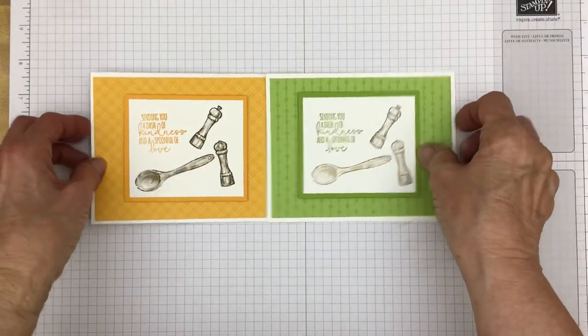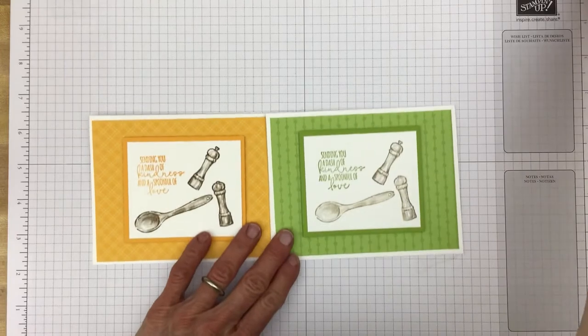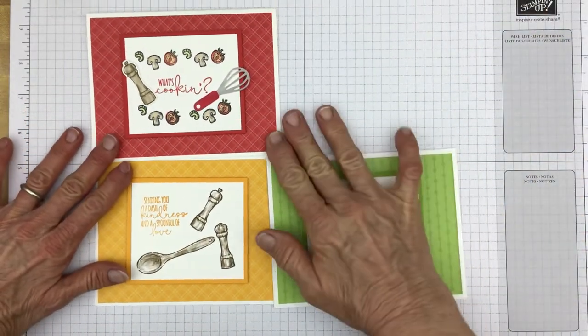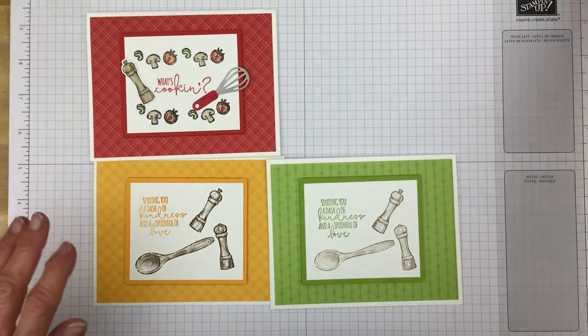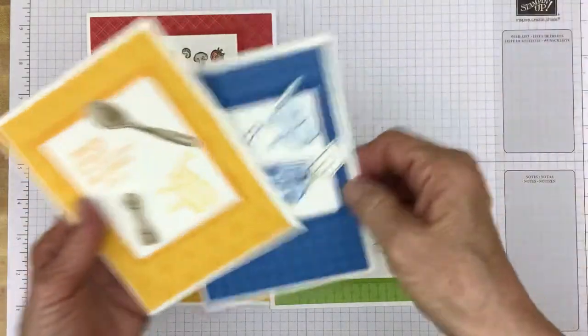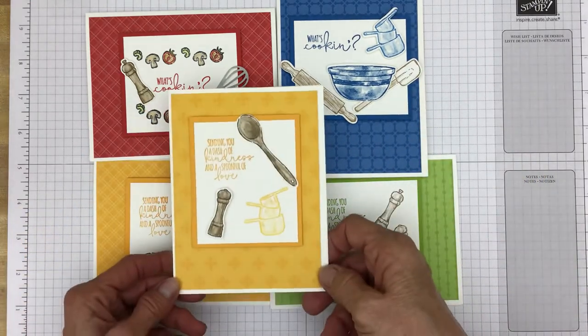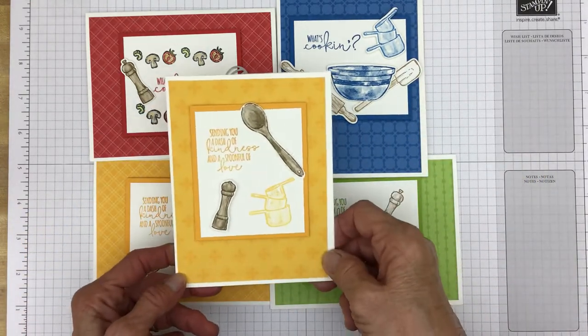So there's the Granny Apple Green. And then there's the Poppy Parade. And then the Pacific Point. And again, the Mango Melody.